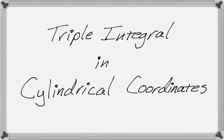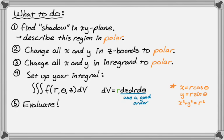In this video we are going to evaluate a triple integral in cylindrical coordinates. So let's take a look at the plan. What we're generally going to do is find the shadow of the solid in the xy plane and describe that region in polar coordinates. We're going to change every x and y we see into polar coordinates, meaning x is r cosine and y is r sine. And then if we see x squared plus y squared, we can replace it with r squared.